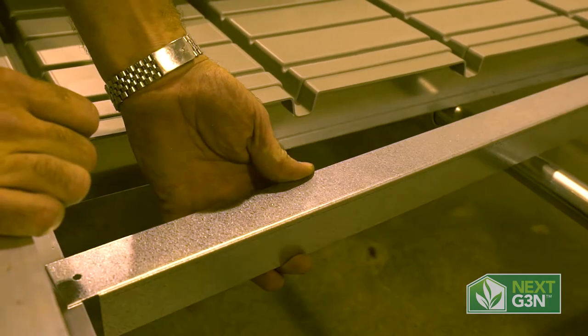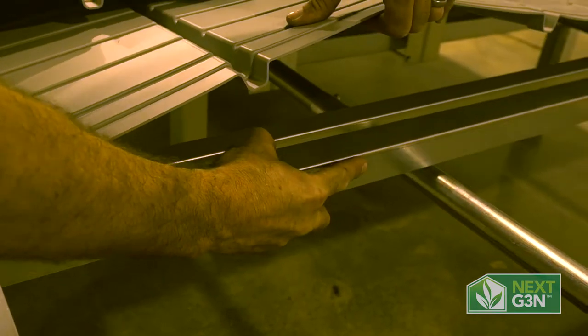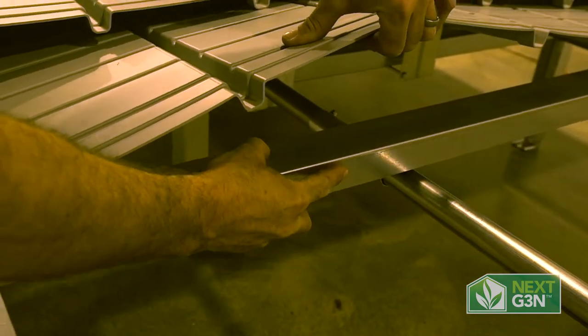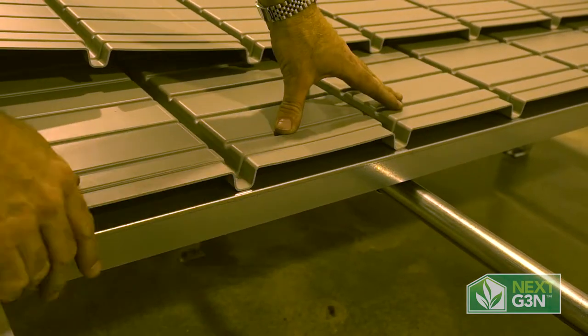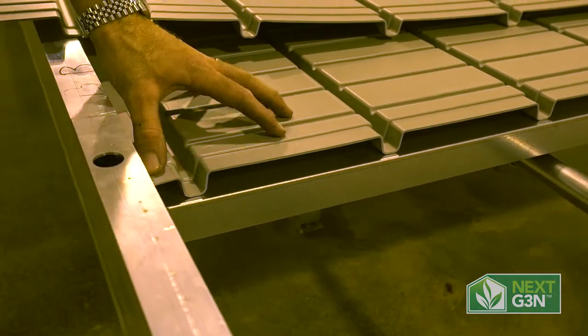This tray support simply sets under the tray at the seam, and allows us to have full support at our seam, and allows our seam to be flat and nice for optimum drainage.